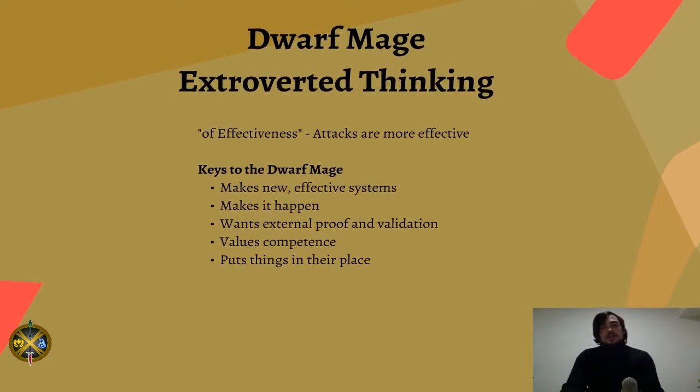First of all, dwarf mages are extroverted thinkers. Some keys to them are they make new effective systems, so they plan ways to get good results, effective results. They make it happen - they're not about waiting around. They're ready to just move things in the environment, move people, and just go go go get something to happen, kind of similar to extroverted sensing but this is a judging function that makes decisions.